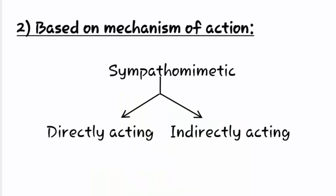The second type of classification is based on the mechanism of action. In this classification, sympathomimetic drugs can be divided into two types: first is directly acting drugs, and second is indirectly acting drugs.